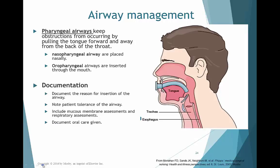Airways can be managed with a pharyngeal airway, used when the patient has obstruction from the tongue itself. We can use either a nasal pharyngeal airway — placed in the nose — or an oral pharyngeal airway, placed in the mouth. We'll demonstrate what these look like and how to insert them on Monday in lab. These require specific documentation when in use.